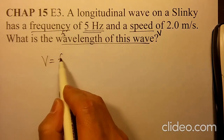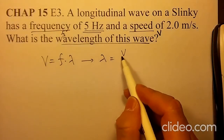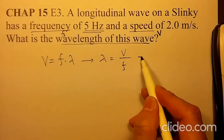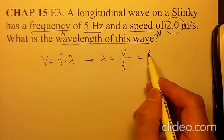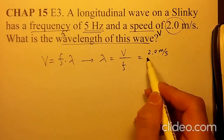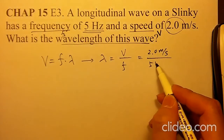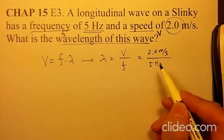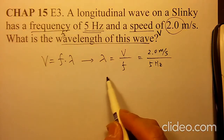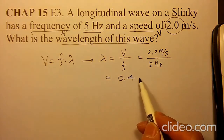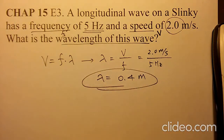V equals F times lambda, and then lambda can be calculated as V over F. V is given as 2.0 meters per second over F as 5 hertz, or 5 per second. Then you can calculate 0.4 meter as your wavelength for this wave.